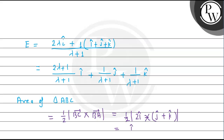We compute î × ĵ plus î × k̂. The resulting cross product factors give terms involving −î × k̂ and −ĵ. Calculating the magnitude of the area of triangle ABC gives us the square root of 2.